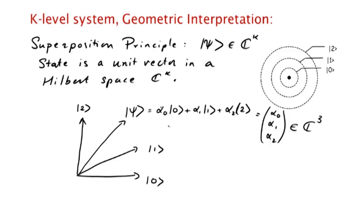We can also talk about what happens when we measure the system. What happens when we measure is the state vector |ψ⟩ gets projected onto one of the basis states. So if you are measuring in the standard basis {|0⟩, |1⟩, |2⟩}, then |ψ⟩ gets projected onto |0⟩ with probability cosine squared of the angle θ₀ it makes with |0⟩. So the probability that the outcome is 0 is cos²θ₀, and if that's the outcome, then |ψ⟩ is projected onto the |0⟩ state.